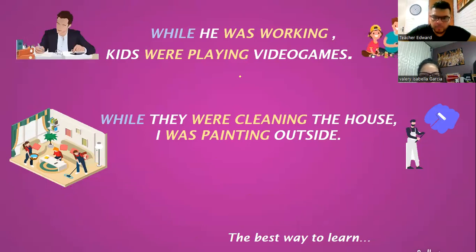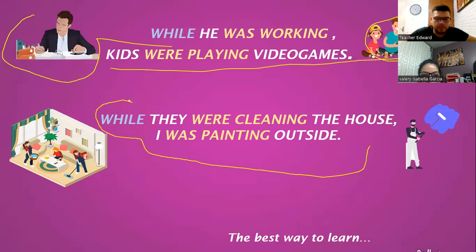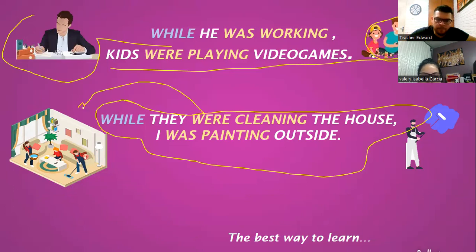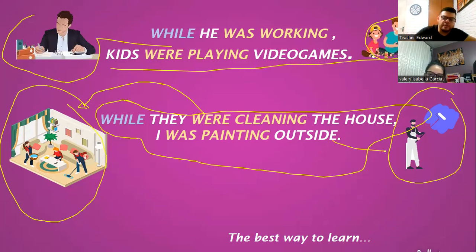'While he was working, the kids were playing video games.' Check the situation — the man was working and the kids were playing video games, two simultaneous actions in the past. Next: 'While they were cleaning the house, I was painting outside.' Two simultaneous activities from the same family.